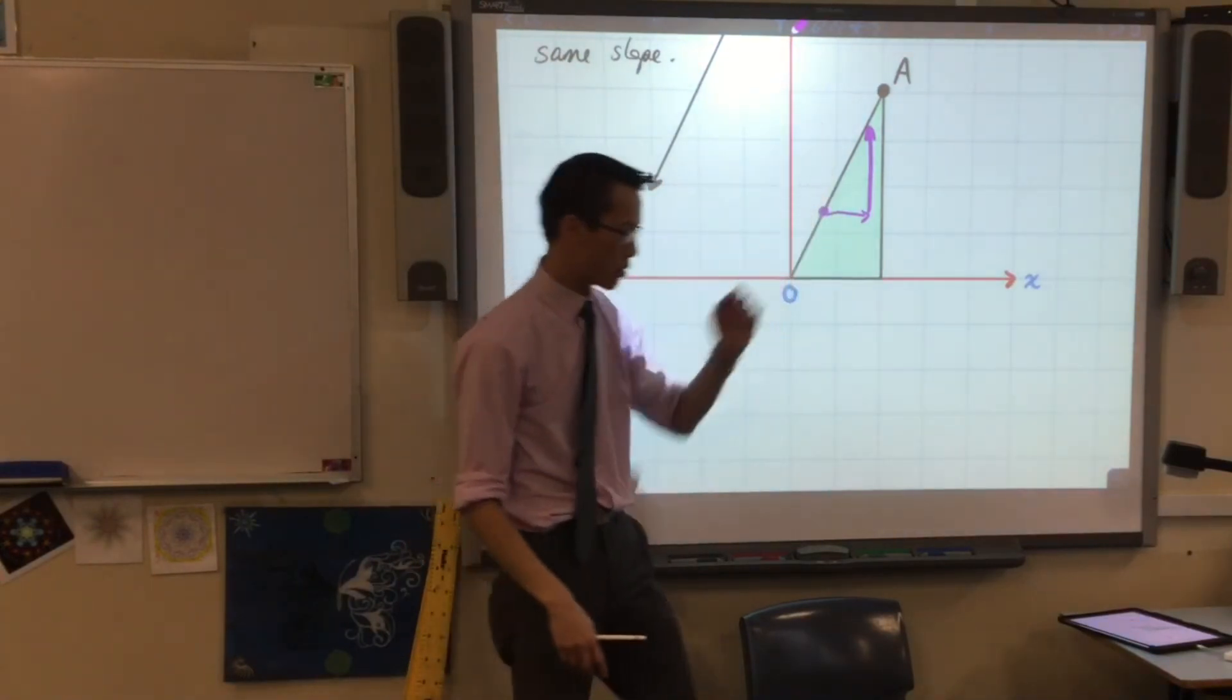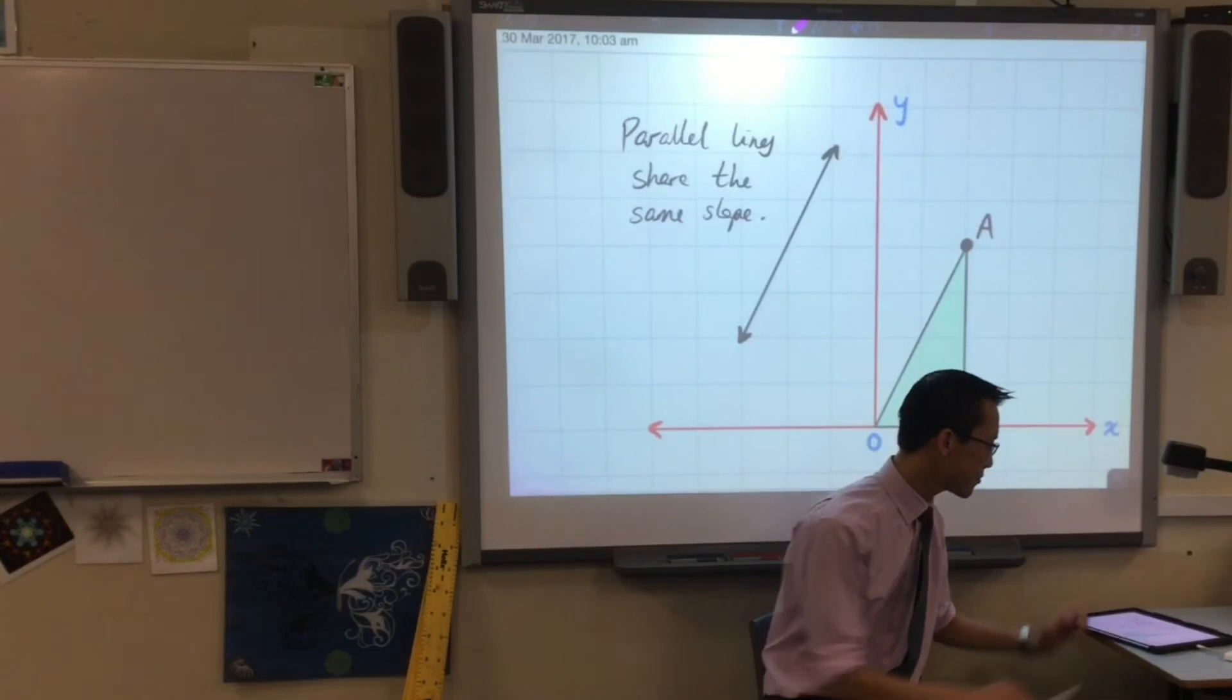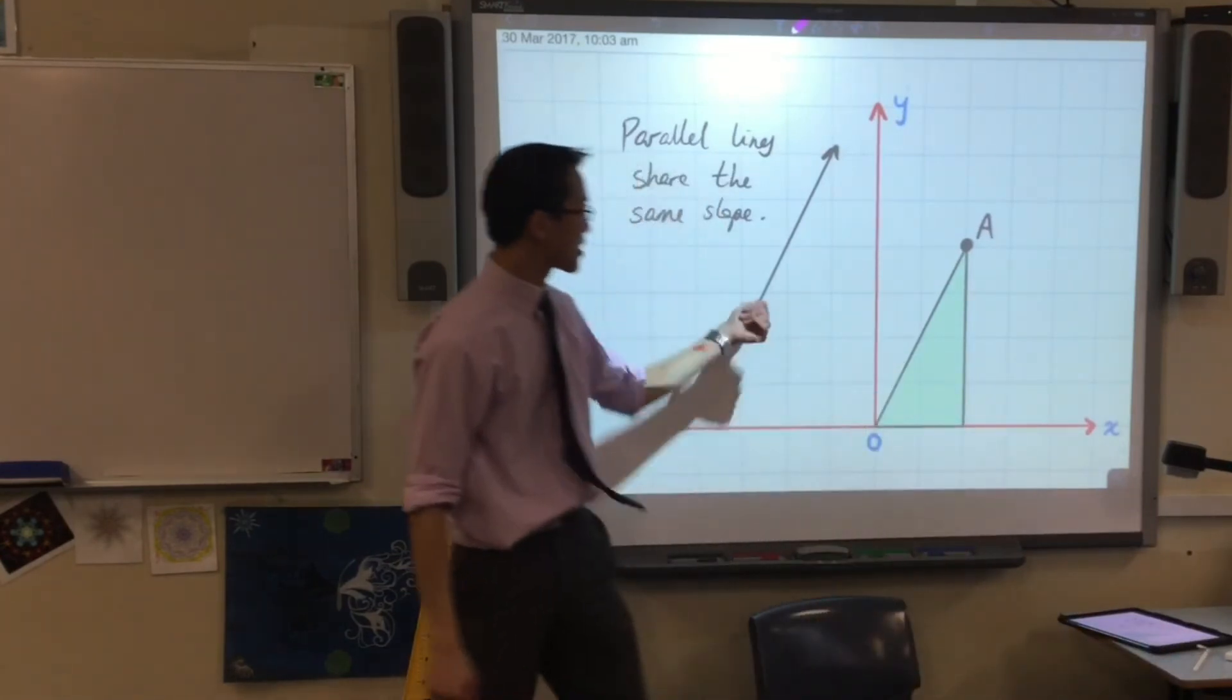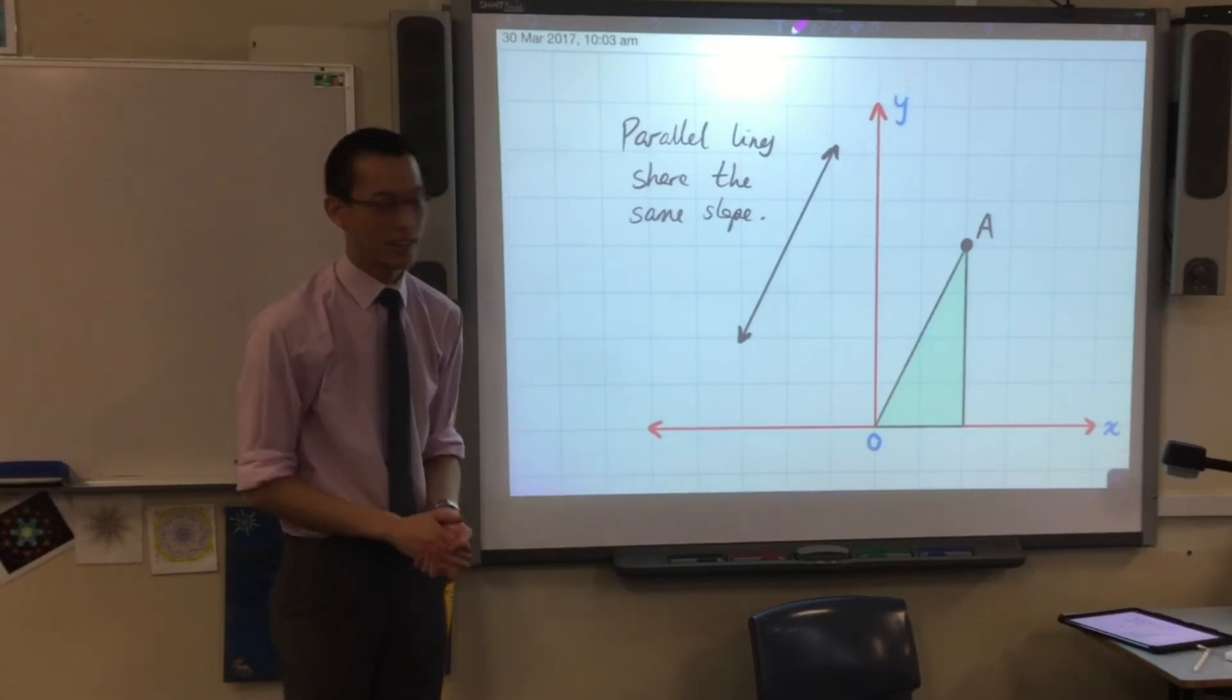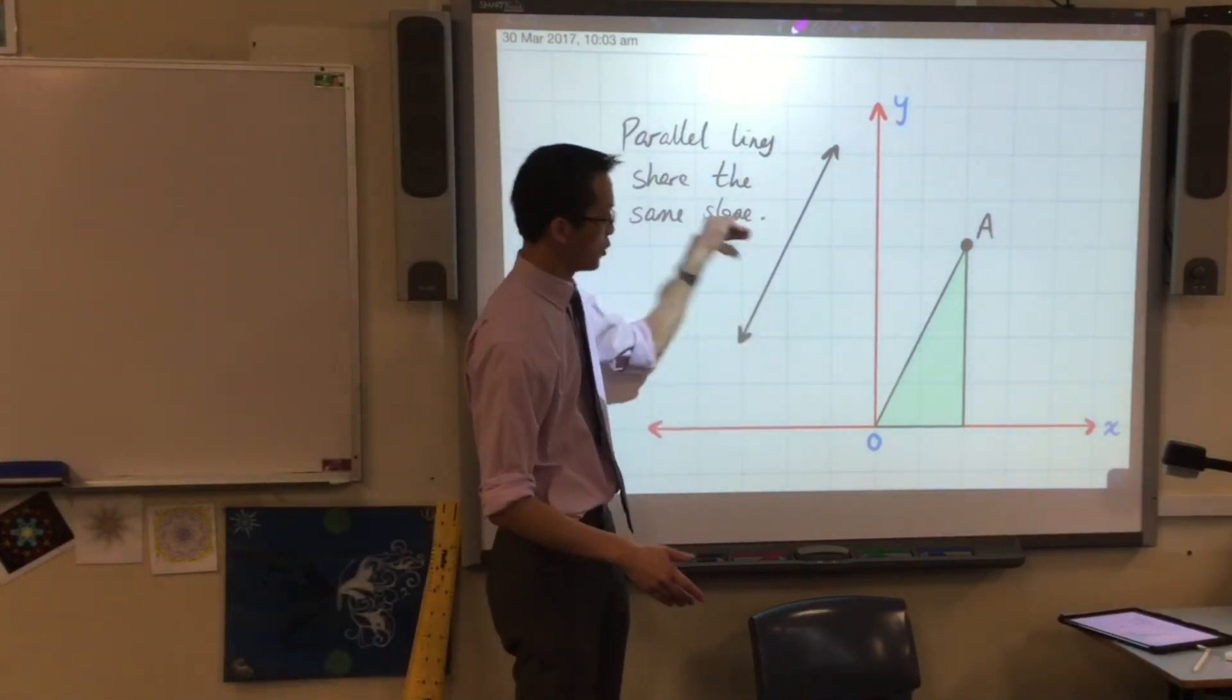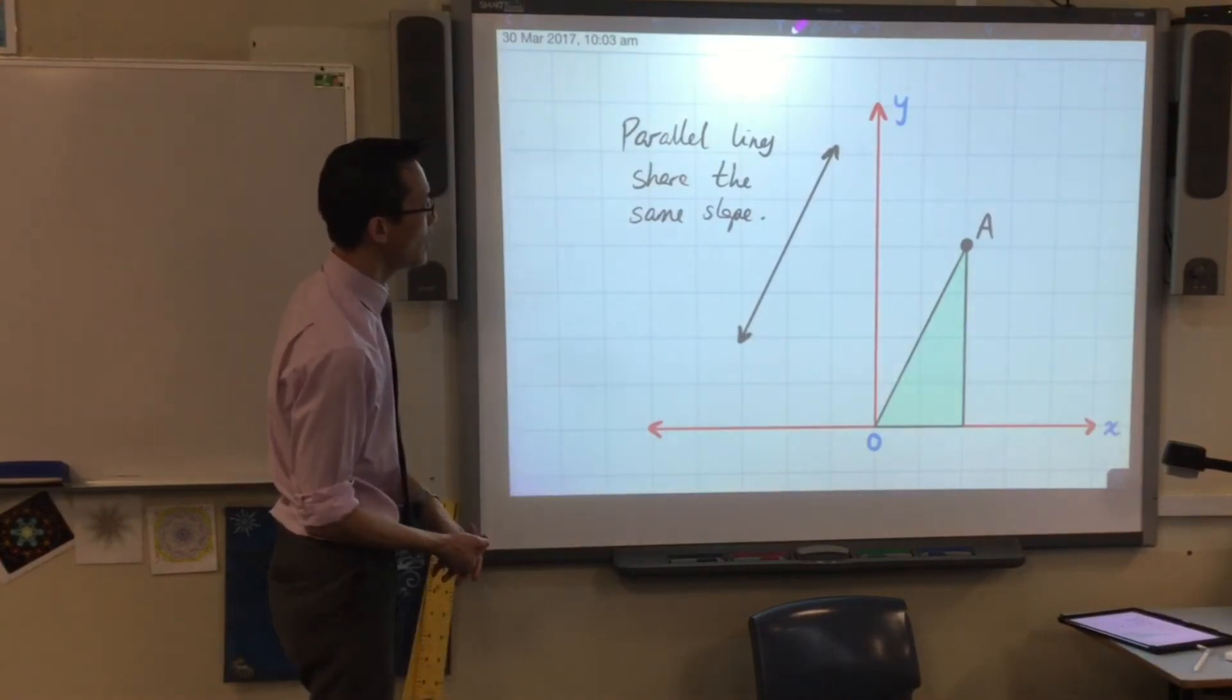So you can see, now let's get rid of these constructions. The thing that makes this guy parallel is that it also has that same gradient of two. Goes across one, up two, across one, up two, et cetera. Alright, parallel lines, they're not too crazy.